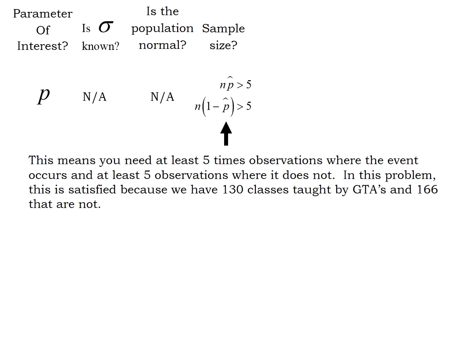In this particular problem, we had 130 classes taught by GTAs, definitely more than five occurrences. So n times p-hat would be 130. And the number of classes that were not taught by GTAs was 166, so n times one minus p-hat would be 166, which is also very much bigger than five. So as long as we have at least five occurrences of the event happening and not happening.